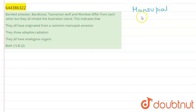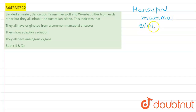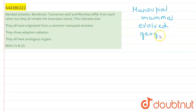They had a common ancestor at first, but as evolution took place over years, they showed different characteristics because of different geographical locations. Different places in Australia have different geographies.